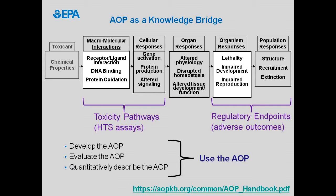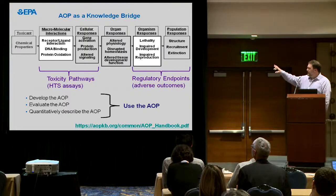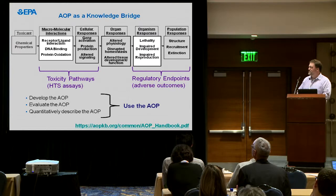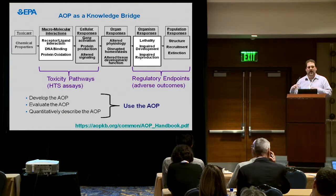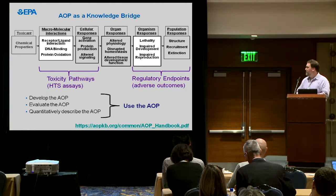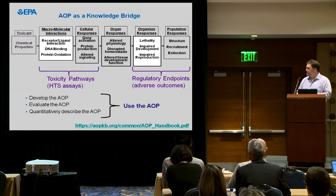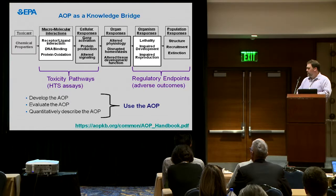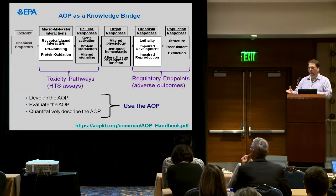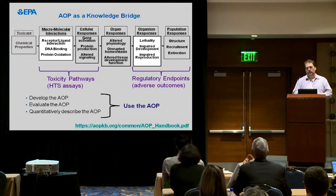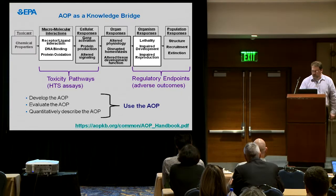Thinking about the idea of toxicity pathways as they were defined in the 2007 NRC report and the regulatory endpoints — basically you're providing a series of steps along the way to describe how a perturbation you might see in an in vitro assay would relate to something at the organism or population level. I'll go briefly through three overlapping steps: developing the AOP, evaluating the AOP, quantitative description of the AOP, and then what you do with it. I'll work through an example in the wiki showing all of those steps.